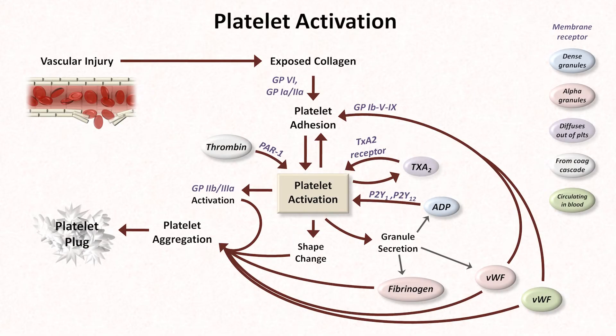Here's a diagram we first saw in the second video on the normal physiology of platelets. It shows how vascular injury leads to exposed collagen, triggering platelet adhesion and activation, which then leads to amplification through platelet release of fibrinogen, von Willebrand factor, ADP, and thromboxane A2, along with other factors such as thrombin. Mediating the effects of these compounds are specific receptors, such as the P2Y12 receptor for ADP, and the 2B3A receptor, which binds fibrinogen and von Willebrand factor to support platelet aggregation and formation of a platelet plug.